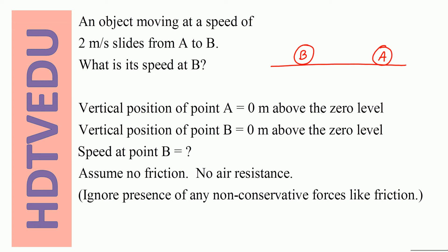An object moving at a speed of 2 meters per second slides from point A to point B. What is its speed at point B? The vertical position of point A is 0 meters above the zero level. Assume no friction, no air resistance — ignore the presence of any non-conservative forces like friction.